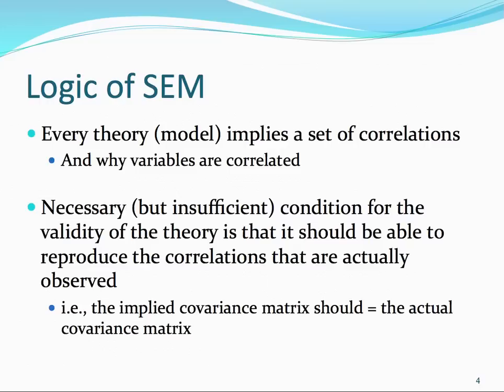The logic behind structural equation modeling is that every theory or model implies that there are a set of correlations. These correlations are between what we call latent variables as well as sometimes error terms, and it specifies why variables are correlated with one another — hence the importance of using theory to draw our models. A necessary but insufficient condition for the validity of the theory is that it should be able to reproduce the correlations we actually observe in our data. So the implied covariance matrix specified by our model should be equal to or similar to the actual observed covariance matrix from our data. Essentially, with SEM we are looking for a correspondence between the model we specify and the data we've collected.